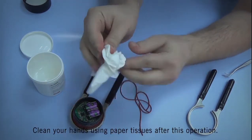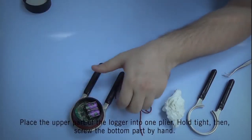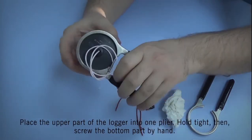You may clean your hands of grease at this point. Begin closing the logger by holding the upper part with the pliers and the bottom part with your hands and twist the logger shut.